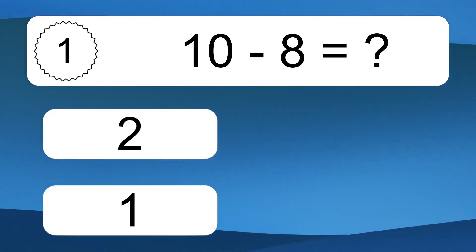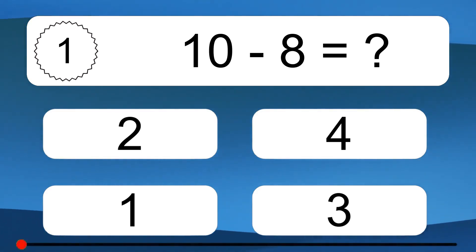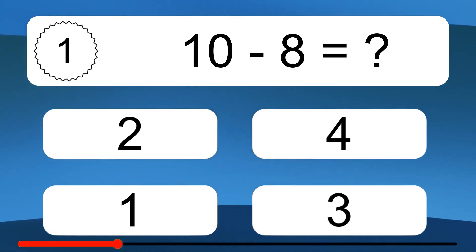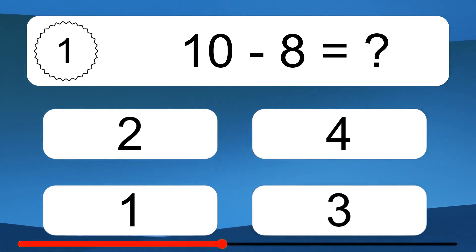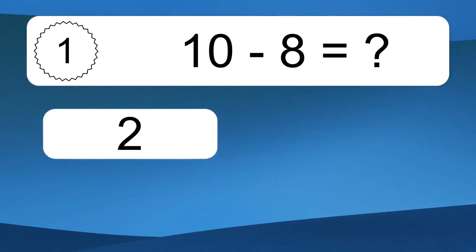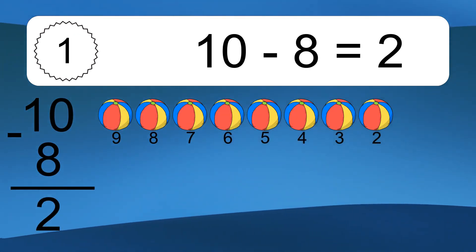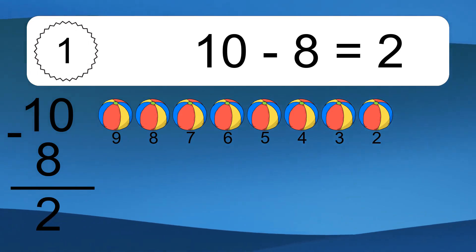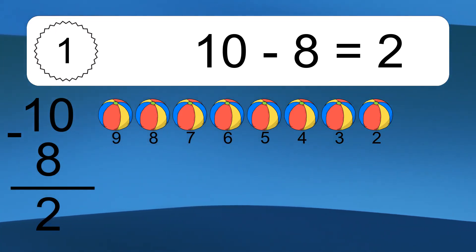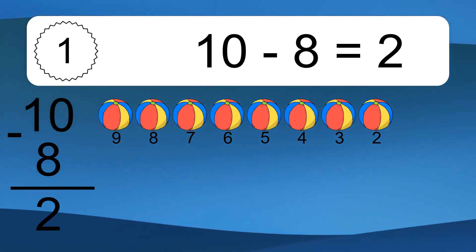10 minus 8 equals what? 10 minus 8 equals 2. Let's count it: 9, 8, 7, 6, 5, 4, 3, 2.